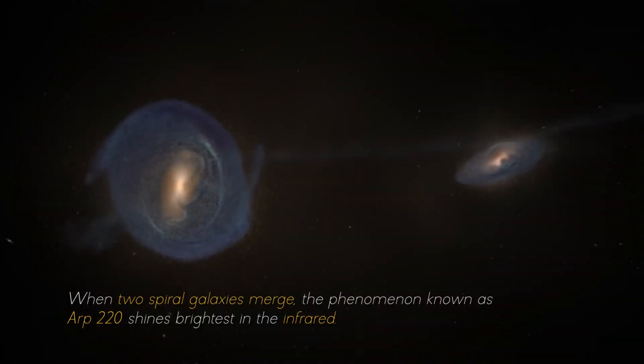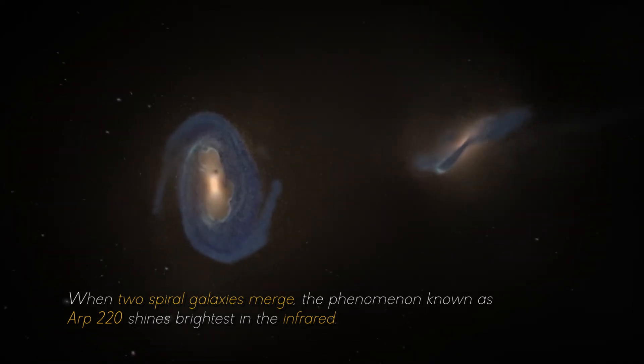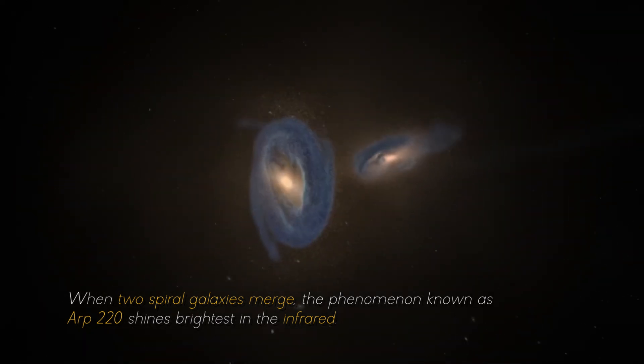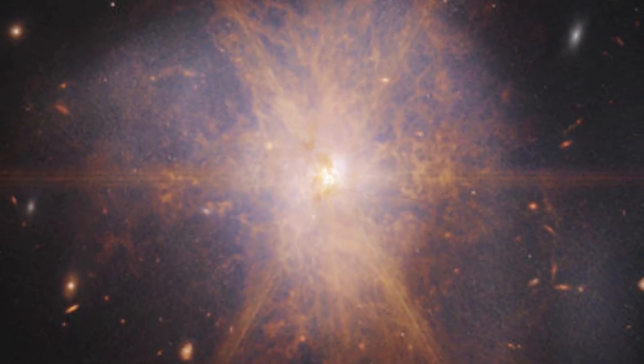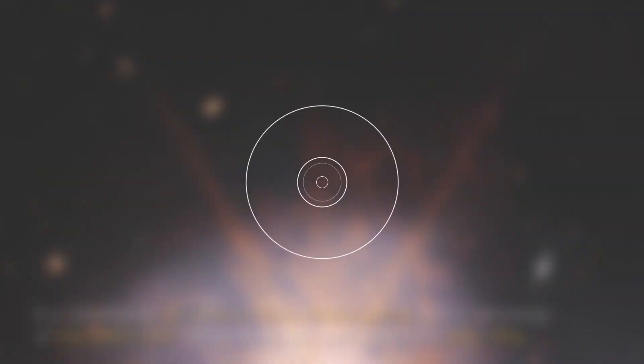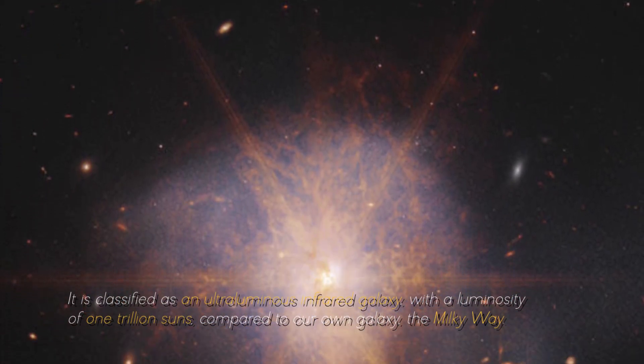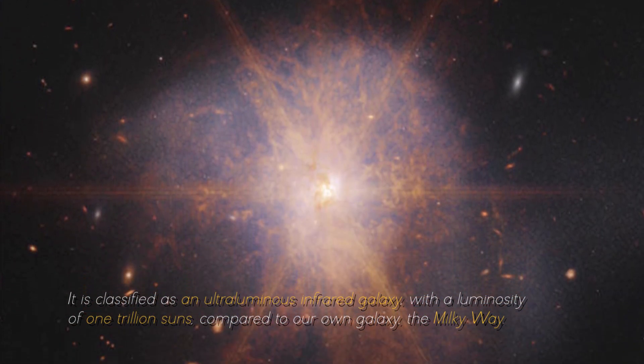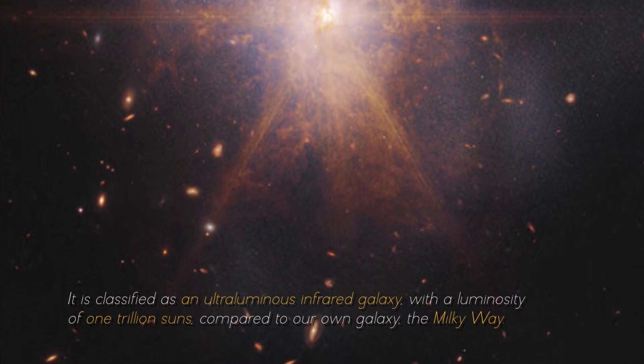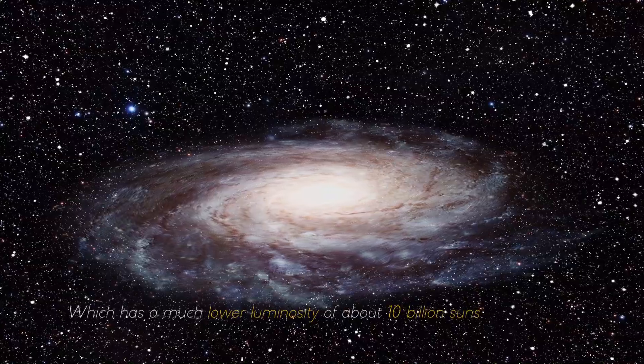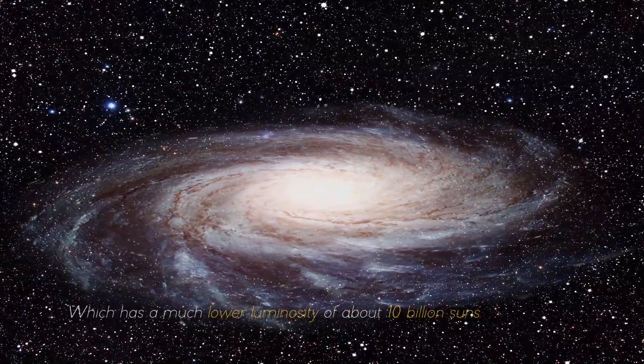When two spiral galaxies emerge, the phenomenon known as ARP 220 shines the brightest in the infrared, making it perfect for observation by the James Webb Space Telescope. It is classified as an ultra-luminous infrared galaxy, with a luminosity of 1 trillion suns compared to our own galaxy, the Milky Way, which has a much lower luminosity of about 10 billion suns.